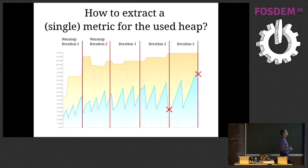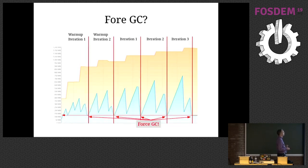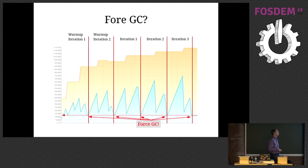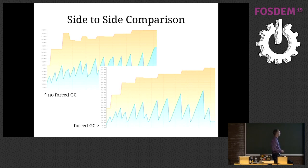One idea you might have is to force garbage collection after each iteration. So I fill the data structures, do some warm-up, then force the garbage collector and take a look at what's left on the heap. Then we have a consistent metric about the heap space. But when you compare two benchmark runs — one with no forced GC, one with forced GC — you see it's quite different in shape. You're actually interfering a lot with what the garbage collector is doing and how the JVM would react naturally if you just let it do its thing.